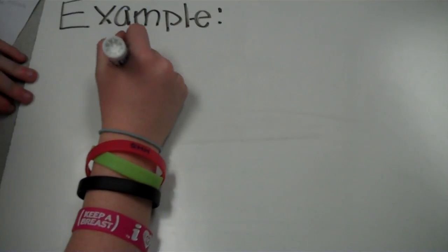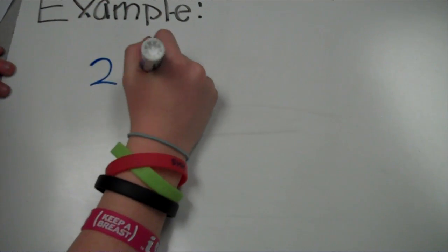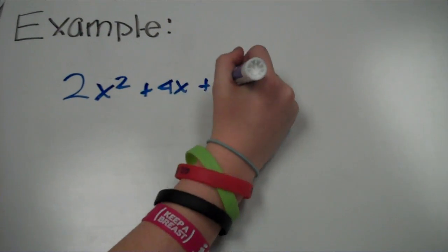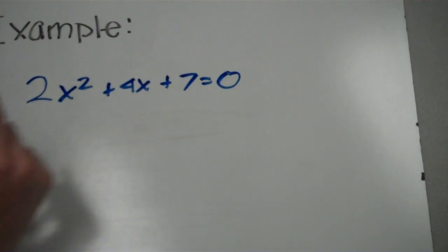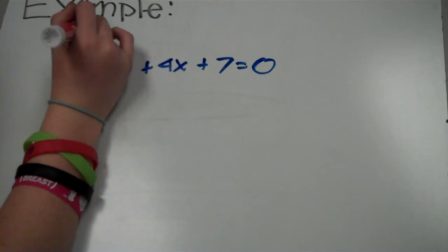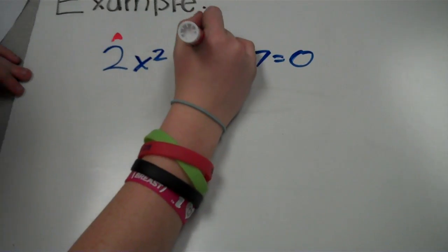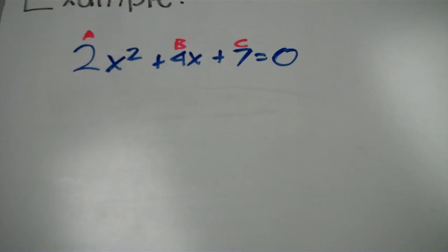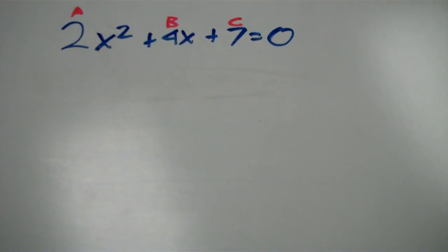Our example is 2x squared plus 4x plus 7 equals 0. A would be 2, b would be 4, and c would be 7. You start out by using the quadratic formula,